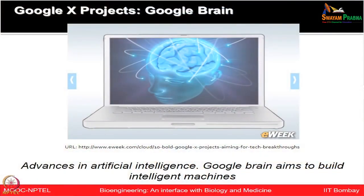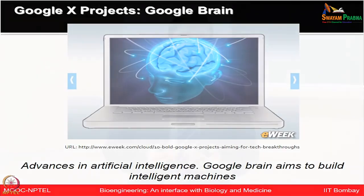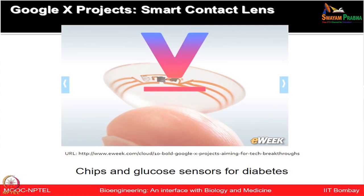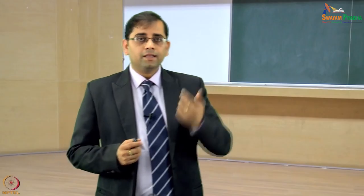Let us look at the Google X project, also known as Google Brain. There is a lot of research happening in artificial intelligence — how to build intelligent machines by incorporating AI. Google projects also incorporate smart contact lenses. Imagine a contact lens with sensors that measure glucose levels throughout the day, with chips monitoring and sending data to a mobile device, alerting an individual to drops in glucose. Because it is in direct contact with body fluid, it enables real-time monitoring of glucose and diabetes-related problems.